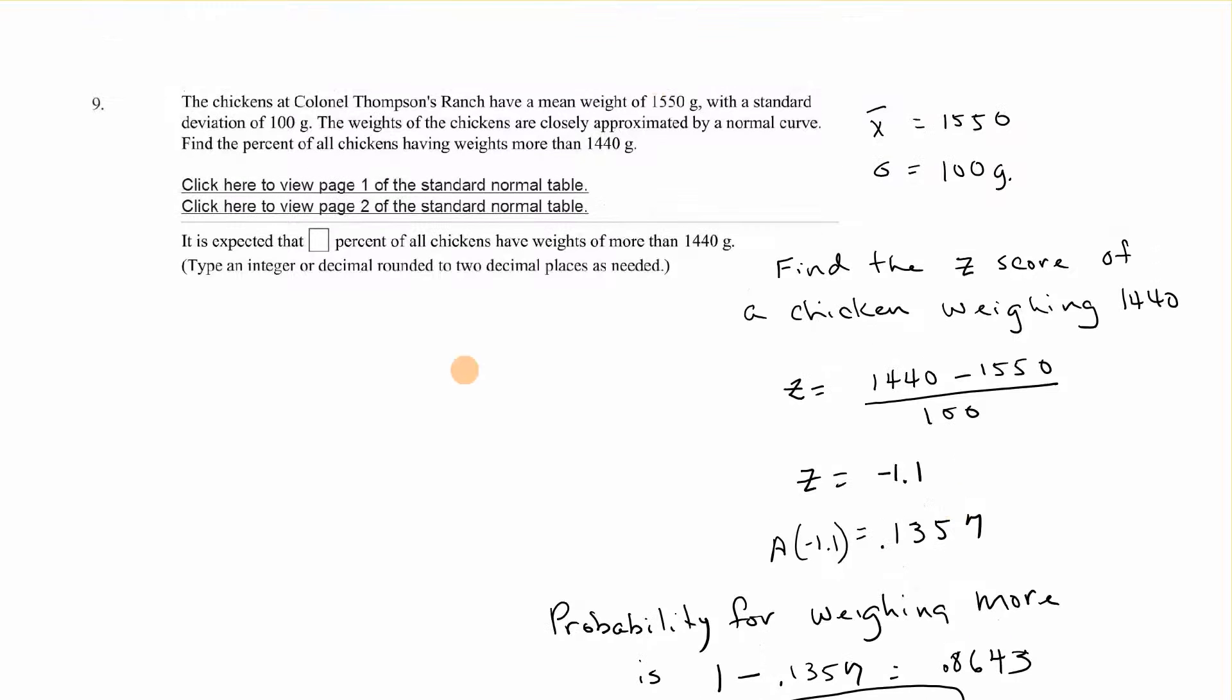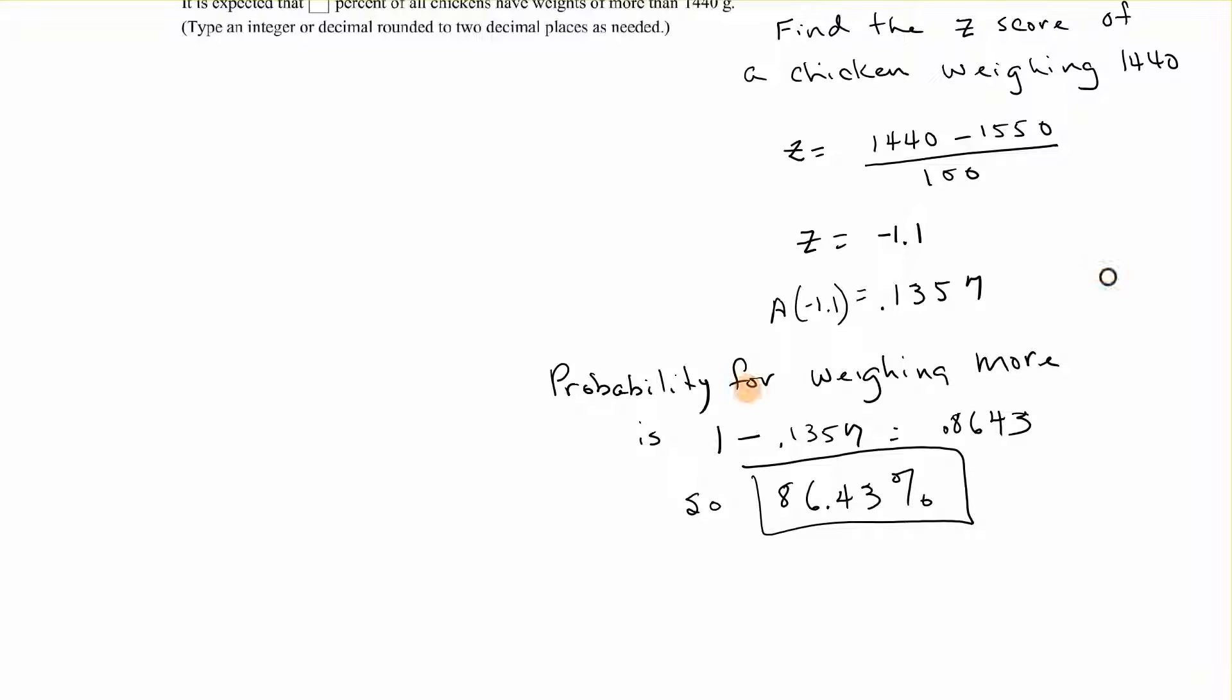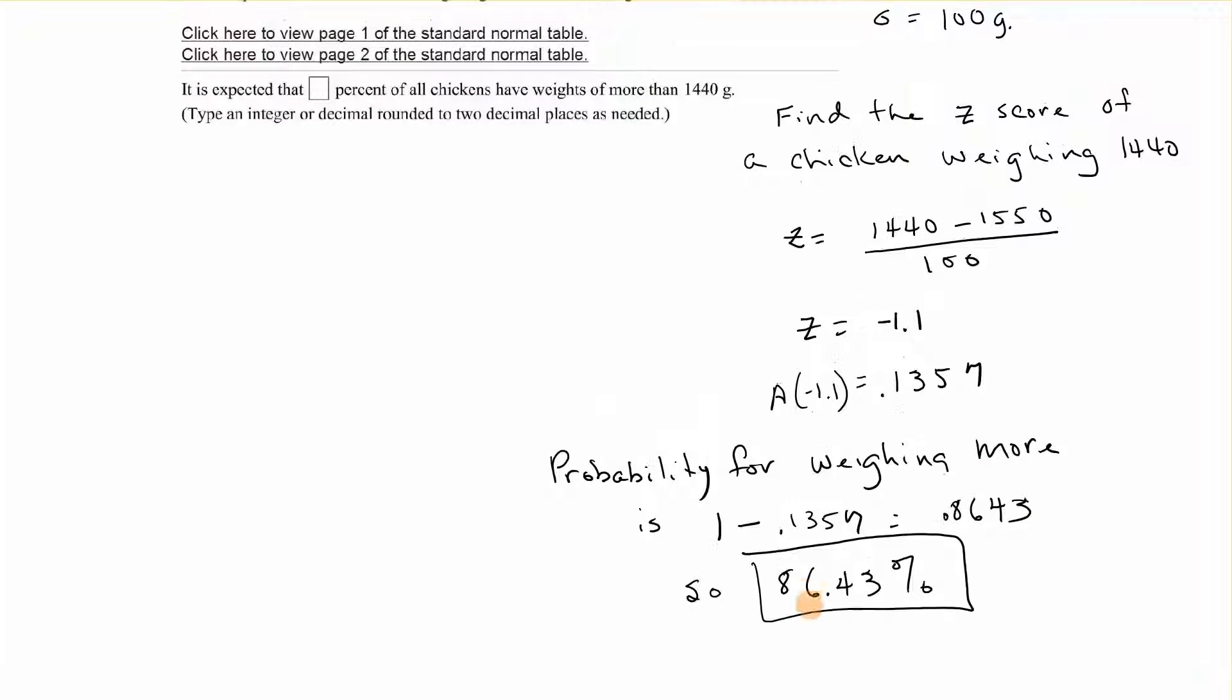The question asked for all the chickens having weights more than that. So we want the probability for weighing more is 1 minus that. When we do that, we get 0.8643. It asks for percent, so we'll move the decimal two places and we get 86.43%. This gives you a taste of using z-scores and the standard normal table, and hopefully that will get you through 9.3. Thank you.